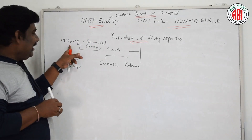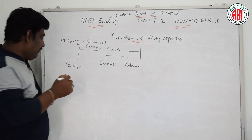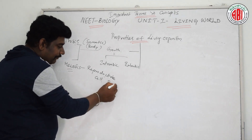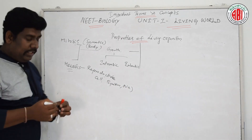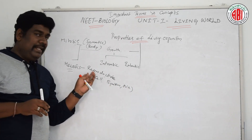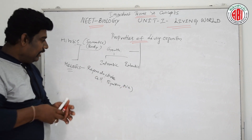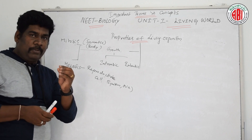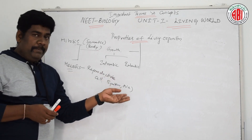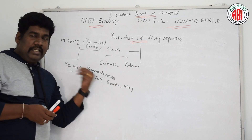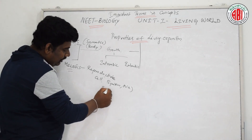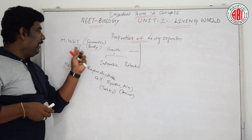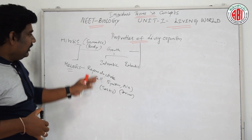Mitosis takes place in somatic or body cells. Meiosis takes place in reproductive cells — these reproductive cells are like sperm and ova, also called gametes. These gametes are produced from two different individuals: the male reproductive organ produces sperm, collected from the testes, while the female reproductive organ produces ova, collected from the ovary. So meiosis always takes place in reproductive cells, whereas mitosis takes place in somatic or body cells.